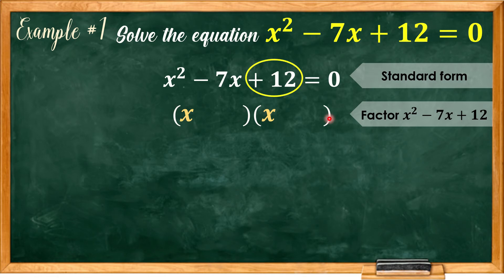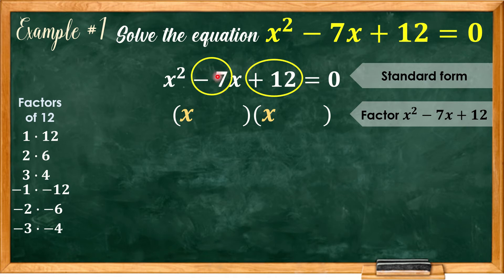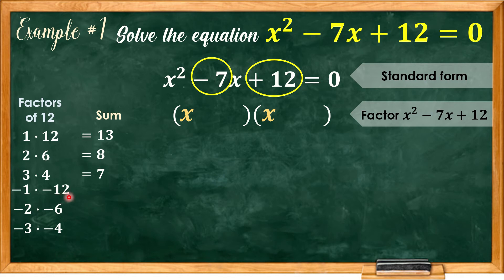Now let us list the factors of positive 12: positive 1 times 12, 2 times 6, 3 times 4, negative 1 times negative 12, negative 2 times negative 6, and negative 3 times negative 4. The next condition is that the sum of the pair must equal negative 7. So: 1 plus 12 equals 13; 2 plus 6 equals 8; 3 plus 4 equals 7; negative 1 plus negative 12 equals negative 13; negative 2 plus negative 6 equals negative 8; and negative 3 plus negative 4 equals negative 7.